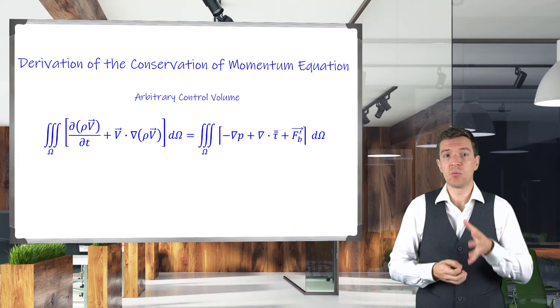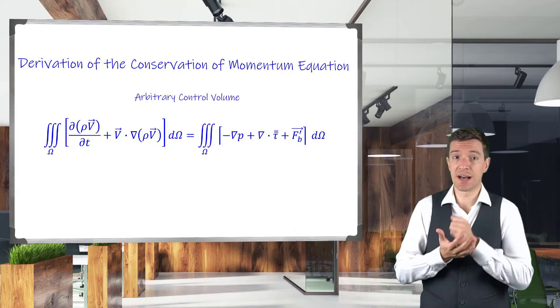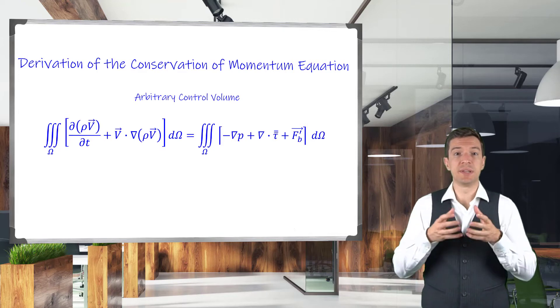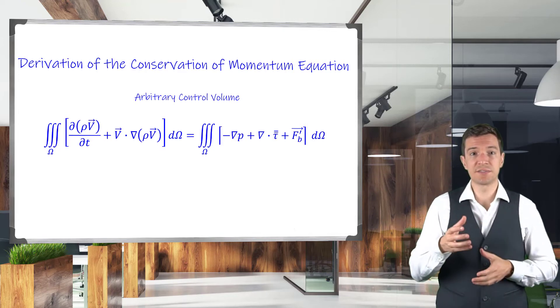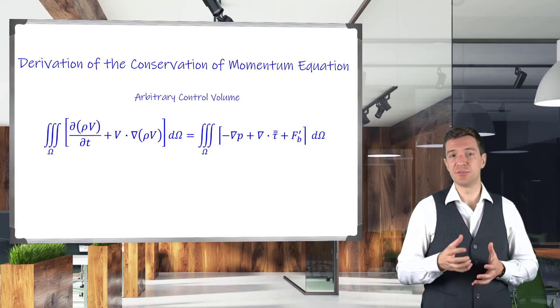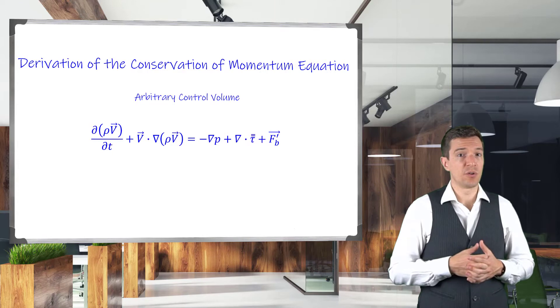Then, we can assume that the control volume is arbitrary. Hence, the integrants must be equal to zero to satisfy the conservation equation. The equation is then reduced in its differential form.